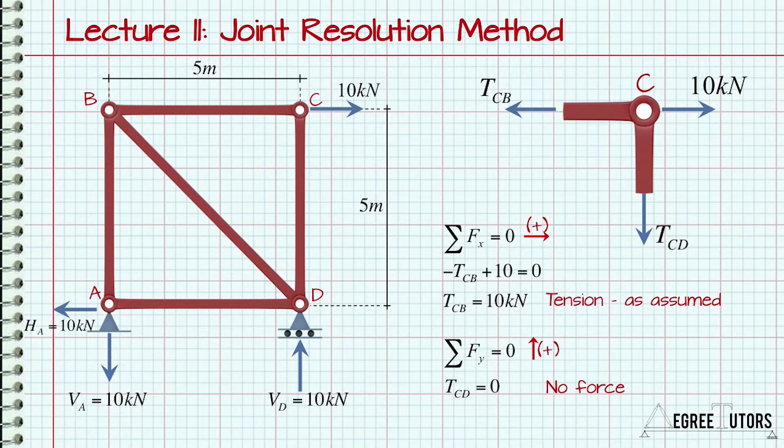At this point, it's a good idea to draw the member forces directly on the structure so we can keep track of how the solution is progressing. Note that because I know the force of member CB is 10kN's tension, I can also draw the corresponding arrow at joint B indicating tension. The fact that member CD has no internal force is represented here by a circle or zero.